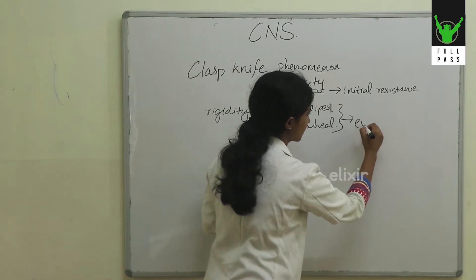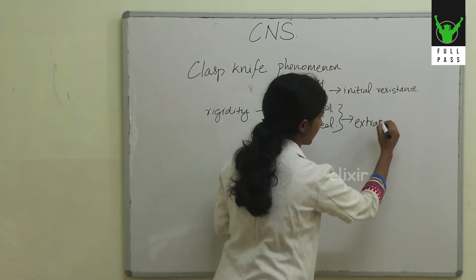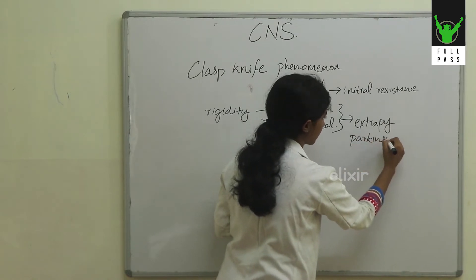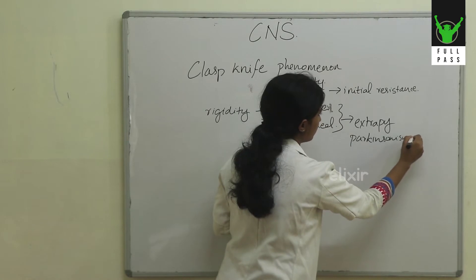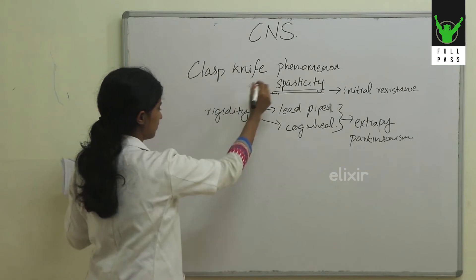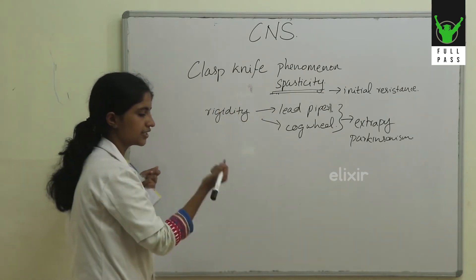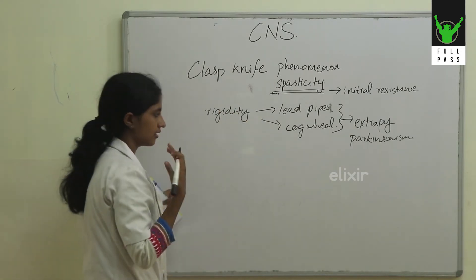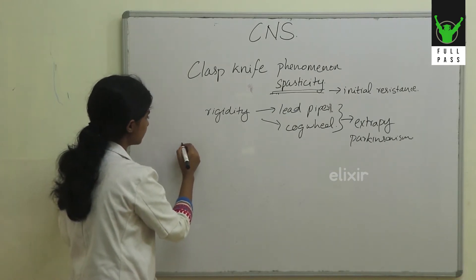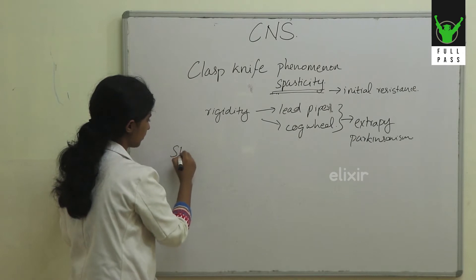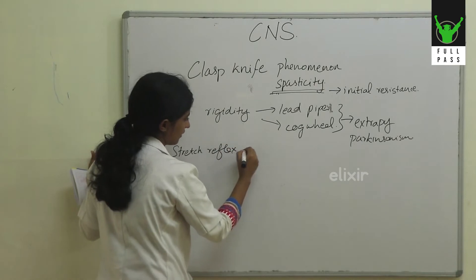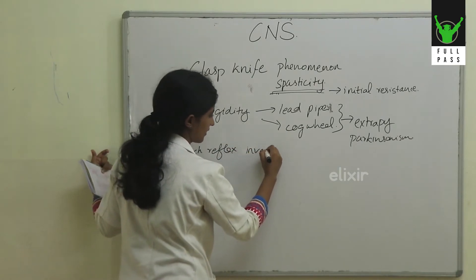These are usually seen in extrapyramidal tract involvement and in Parkinsonism. The clasp knife phenomenon — that is, initial resistance followed by a loss of resistance — is because of a stretch reflex followed by an inverse stretch reflex.